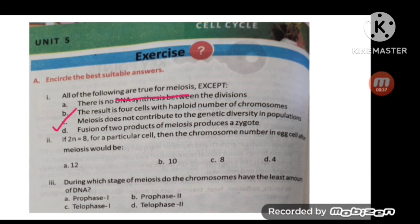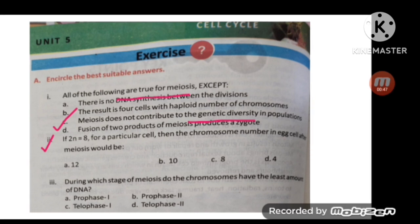The correct option is C — meiosis doesn't contribute to genetic diversity in the population. So this is the exception. MCQ number two: if 2n equals eight for a particular cell, then the chromosome number after meiosis would be four.